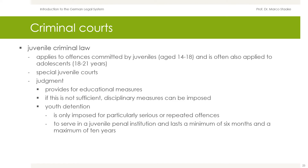Juvenile criminal law provides for educational measures — for example, the instruction to perform community service. If this is not sufficient, disciplinary measures can be imposed, such as the requirement to make good the damage or youth detention. Youth detention is imposed for particularly serious or repeated offenses, served in a juvenile penal institution and lasting a minimum of six months to a maximum of ten years. Special juvenile courts decide these cases.